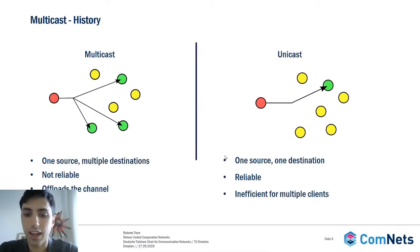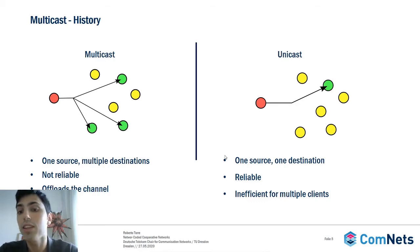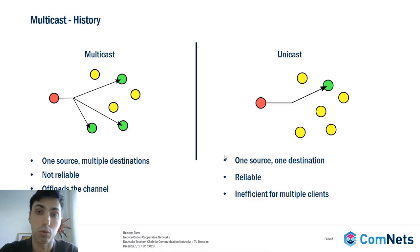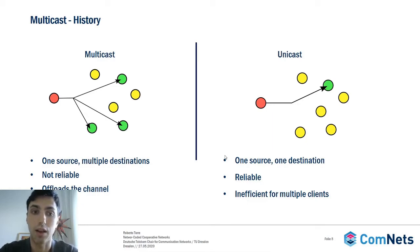Multicast — most of us know this, but what is multicast? On the right side of the screen we see unicast: one source, which is the red dot, and one destination, which is the green dot. It is straightforward and very reliable, but it is inefficient if we want to send the same content to multiple clients because we end up multiplying the same traffic. That's why we have different ways of casting, like broadcast — one to all — or multicast, which is one to many: one source and multiple destinations, as we can see on the left side of the screen.